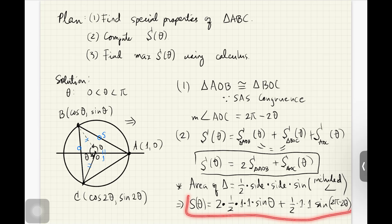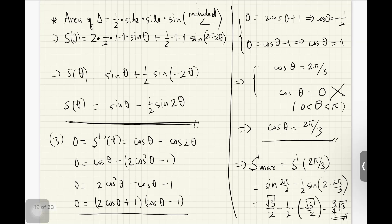Now we simplify. The expression becomes: area = 2·(1/2)sin(theta) + (1/2)sin(2pi − 2theta). The 2 and 1/2 cancel to give sin(theta). Since adding any multiple of 2pi doesn't change sine or cosine, sin(2pi − 2theta) simplifies to sin(−2theta) = −sin(2theta). So our final area expression is: S(theta) = sin(theta) − (1/2)sin(2theta).